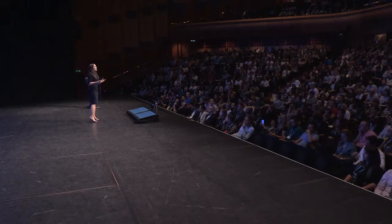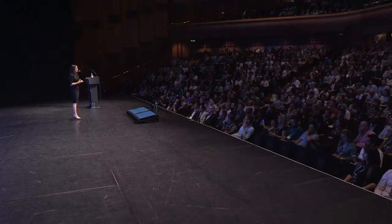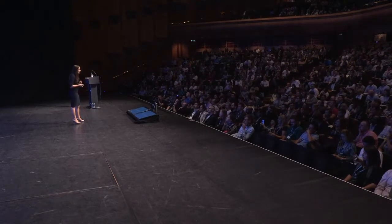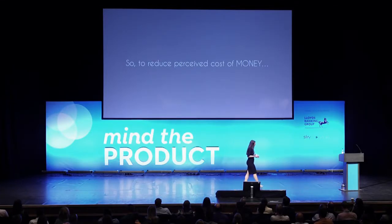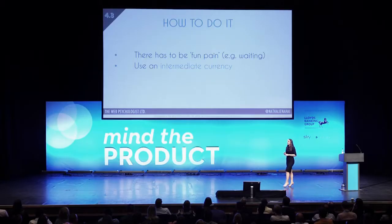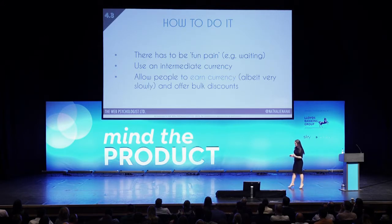There are other ways to do this more ethically. Allowing people to earn currency slowly can also reduce the true cost of paying, as well as offering bulk discounts. To reduce the perceived cost of money: use fun pain through gamifying the experience, use an intermediate currency but don't do it punitively, allow people to earn currency slowly, and offer bulk discounts.